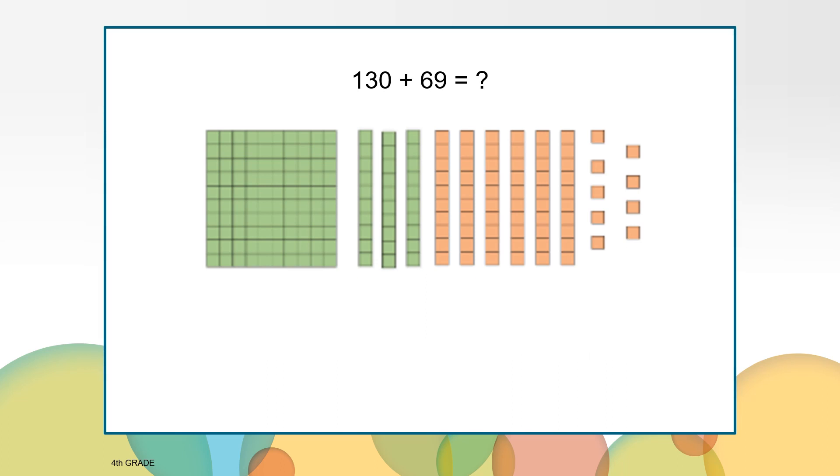We could combine these numbers in another way too. In this case, we would keep the 130 and only decompose the 69 into 60 and 9. Then we would add 130 plus 60 to get 190 plus 9 to get our total of 199 miles.